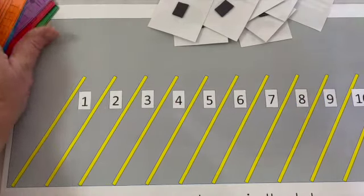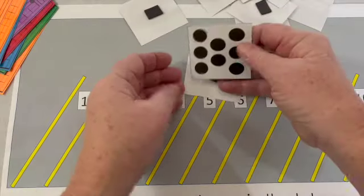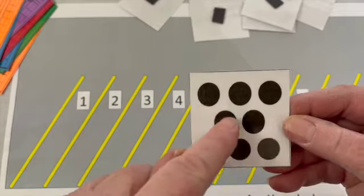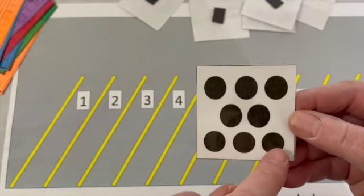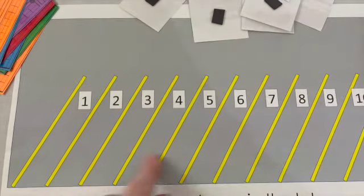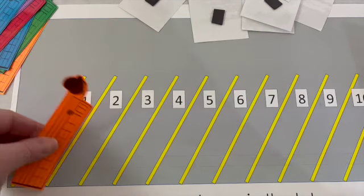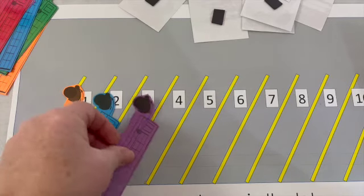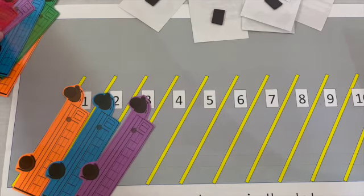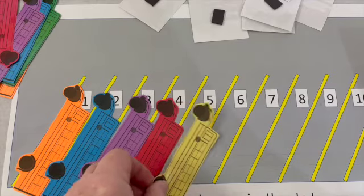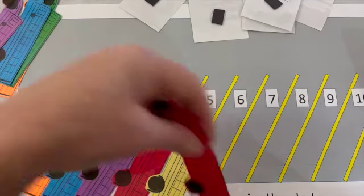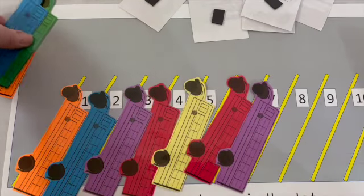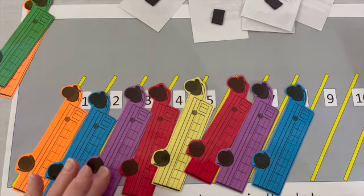Let's try one more. I'm gonna peek from the bottom. Ready? One, two, three, four, five, six, seven, eight. Eight dots, which means I need eight buses. One, two, three, four, five, six, seven, eight. Eight dots, eight buses.